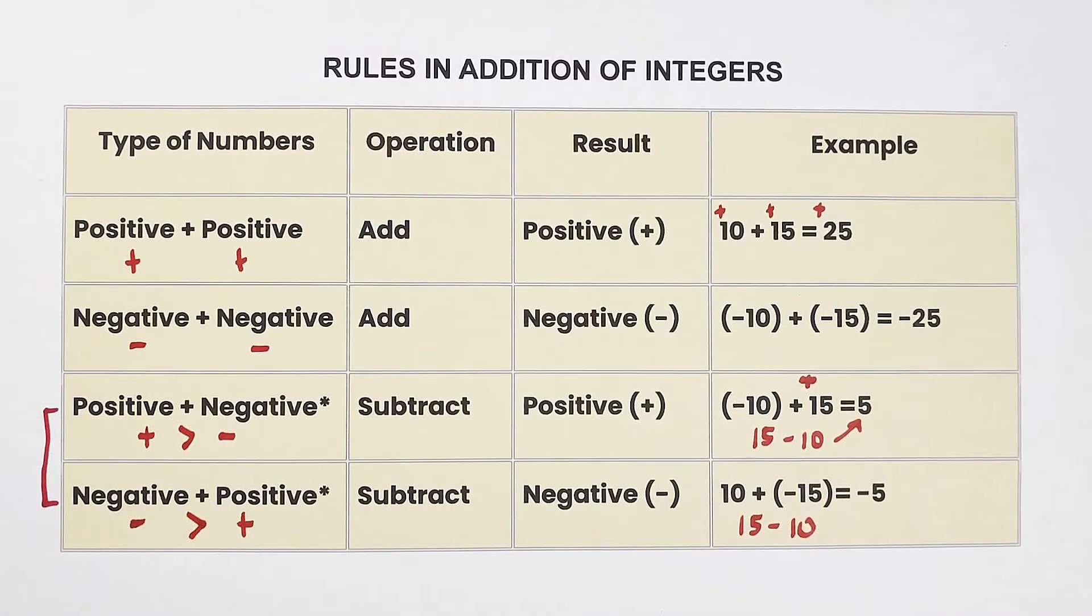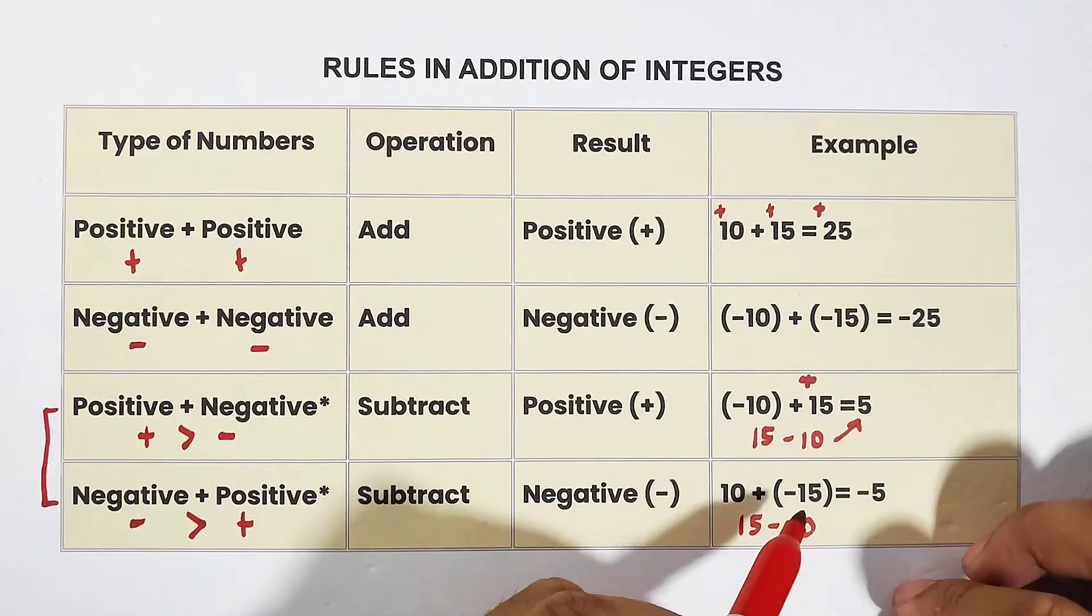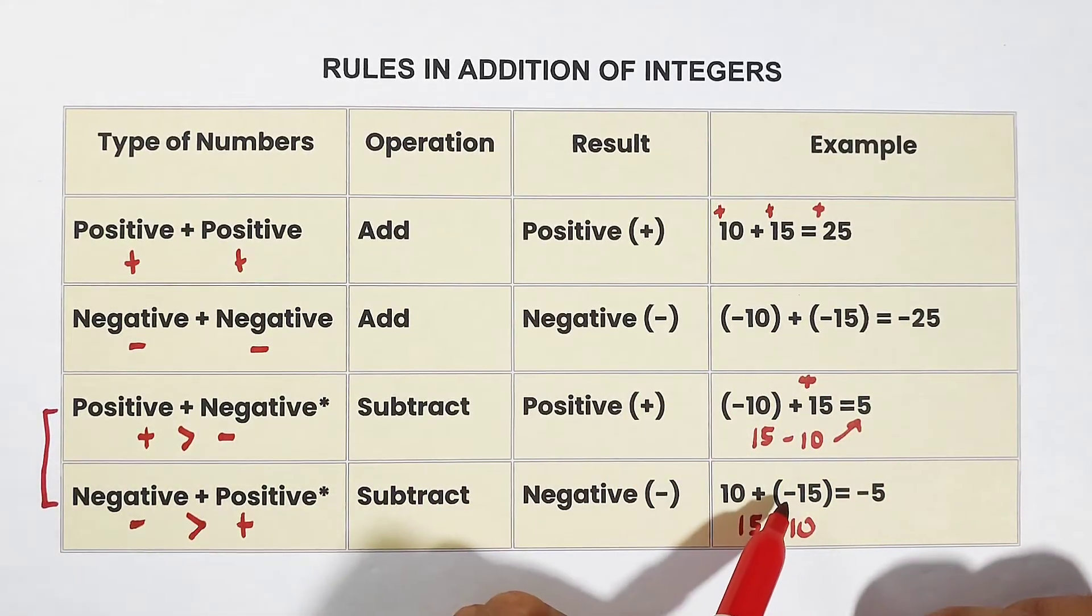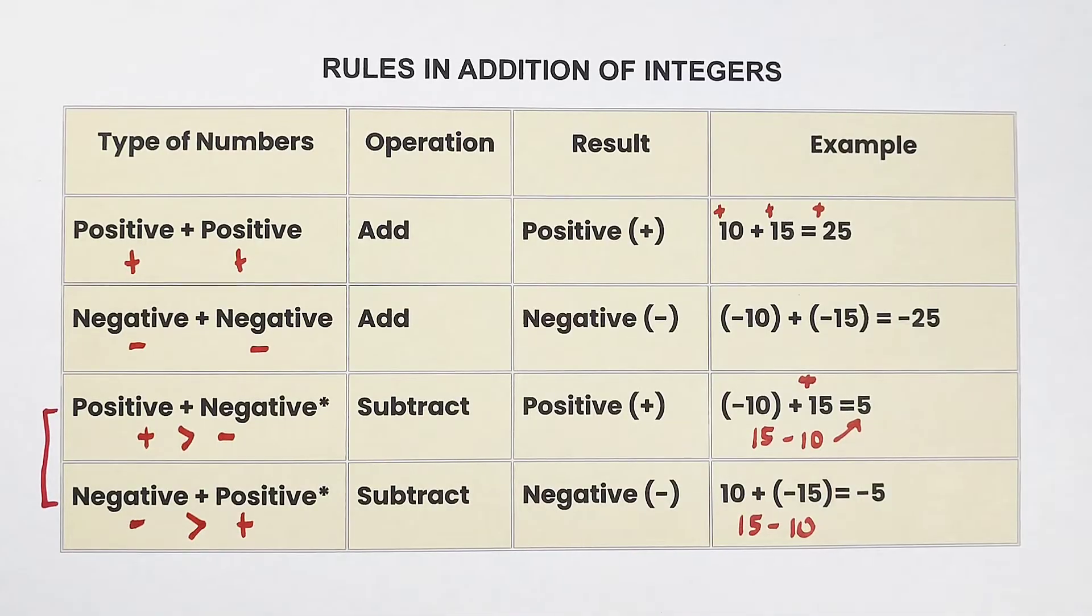That is equal to 5. Now what will determine the sign of our final answer? Compare 10 and negative 15, which one has the greater absolute value? Very good. Negative 15 has the greater absolute value. That's why we will copy its sign, and the answer is negative 5.